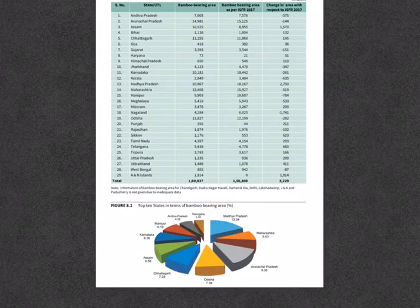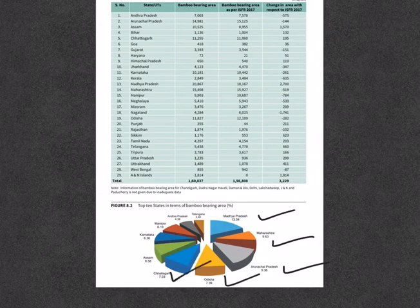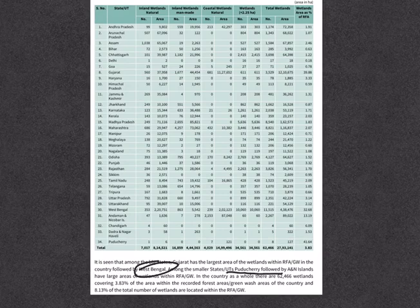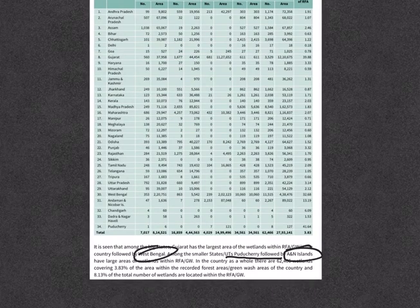In terms of the top 10 states for bamboo-bearing area, Madhya Pradesh is first, closely followed by Maharashtra, Arunachal Pradesh, Odisha, and Chhattisgarh. For wetlands, Gujarat has the largest area in the country, closely followed by West Bengal. Among smaller states and union territories, Puducherry comes first, followed by Andaman and Nicobar Islands. As per the report, there are nearly 62,500 wetlands in the country, covering 3.83% of the area within the recorded forest areas.